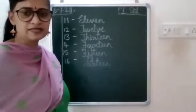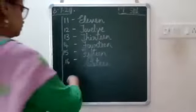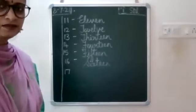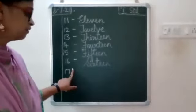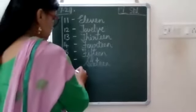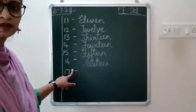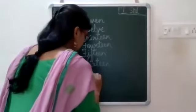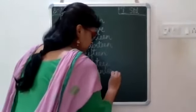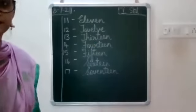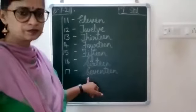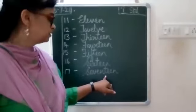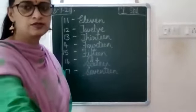After you have written 16, then again leave a line, write 17. Leave one finger space, put a small dash, then again leave a finger space, write capital S-E-V-E-N-T-E-E-N, 17.